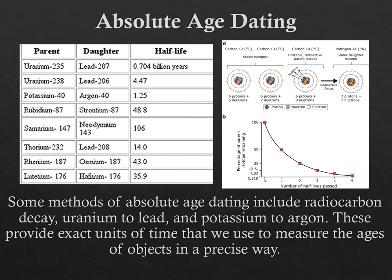Every radioactive element has a distinct half-life — a set amount of time that it will break down. For uranium-238 breaking down into lead-206, its half-life is approximately 4.5 billion years of time. That is the age of our planet.